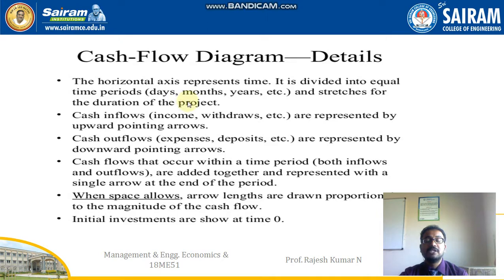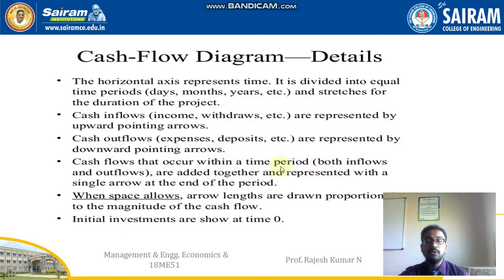The horizontal axis represents time and is divided into equal periods — days, months, years, etc. — based on the application, and it covers the duration of the project. Cash inflows, that is income and withdrawals, are represented by upward-pointing arrows, and cash outflows, that is expenses and deposits, are represented by downward-pointing arrows. Cash flows that occur within a time period — both inflows and outflows — are added together and represented with a single arrow at the end of the period. When space allows, arrows are drawn proportional to the magnitude of the cash flow.